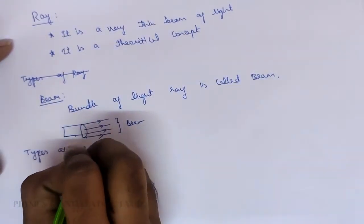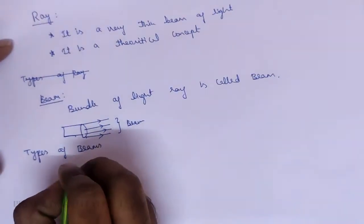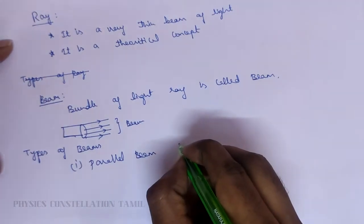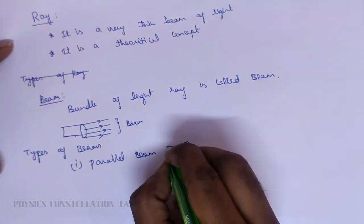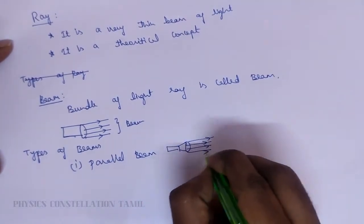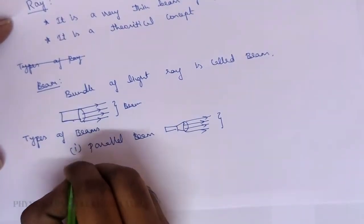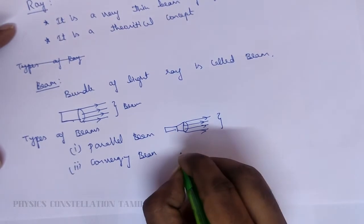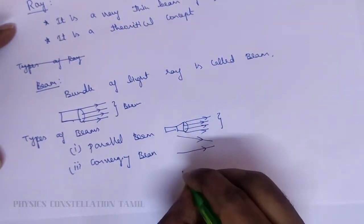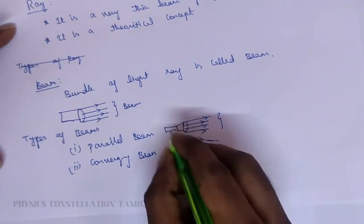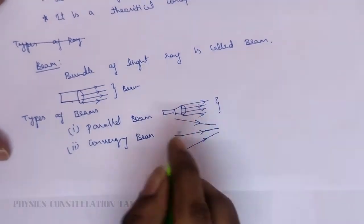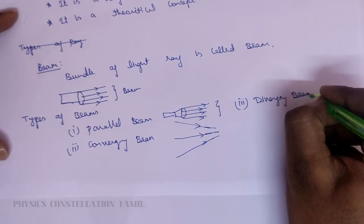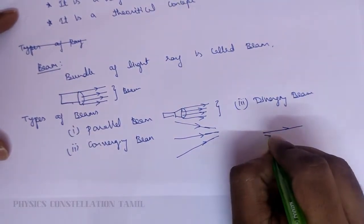Types of beams: The first beam is called a parallel beam. If you have a torch light, the light rays form a parallel beam. The second type is called a converging beam. The third type is called a diverging beam, which is a diverging beam.